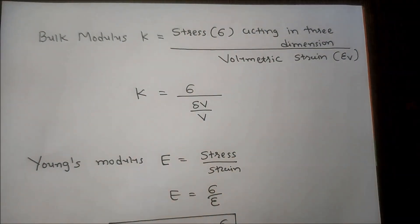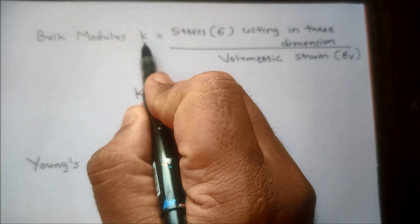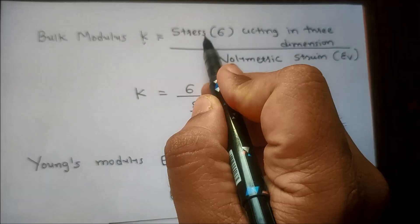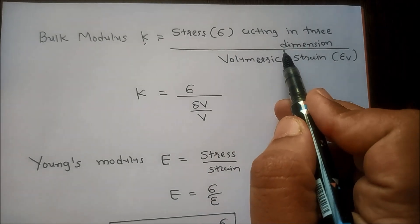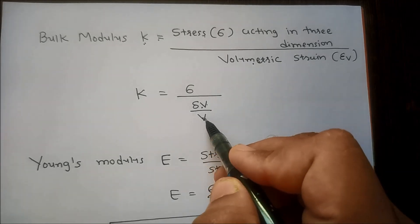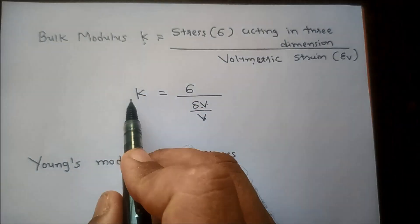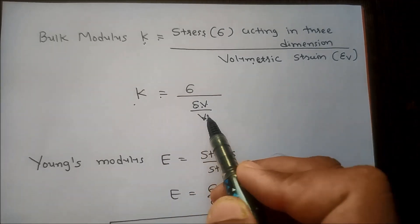Bulk Modulus means when a body is subjected to three mutually perpendicular stresses of equal intensity, the ratio of direct stress to the corresponding volumetric strain is known as Bulk Modulus. The symbol of Bulk Modulus is K. It is the ratio of stress to volumetric strain. Volumetric strain is the ratio of change in volume to the original volume. So Bulk Modulus K equals stress divided by change in volume divided by original volume.